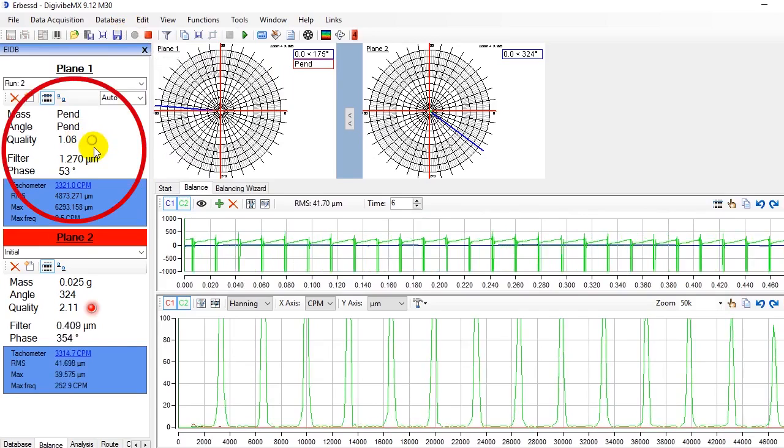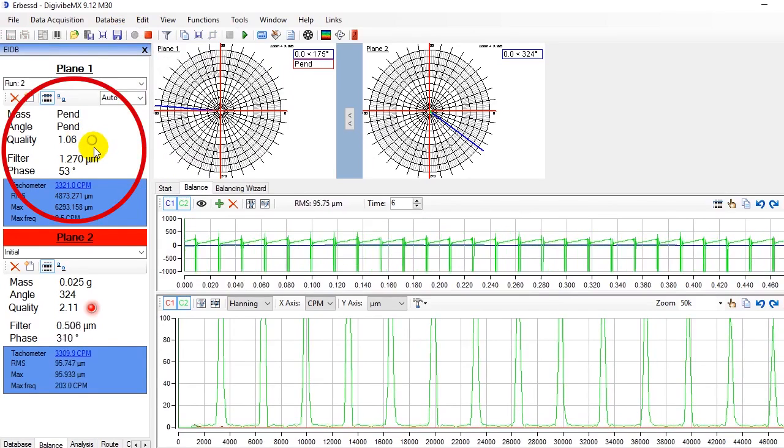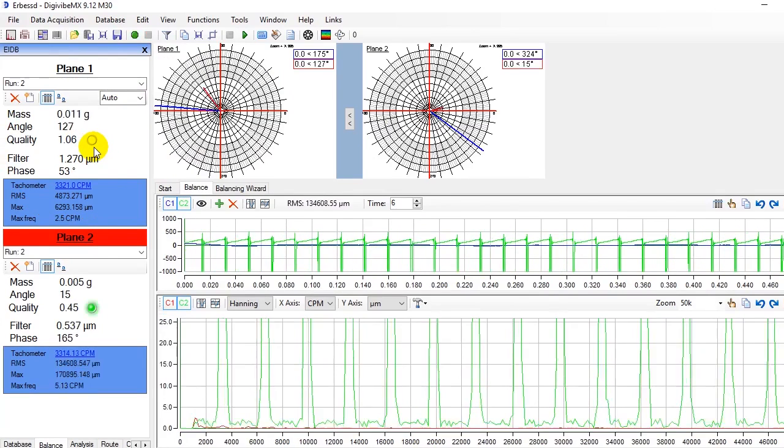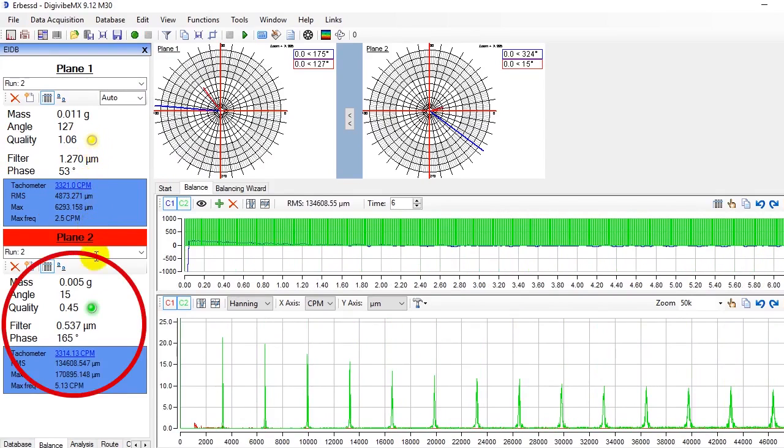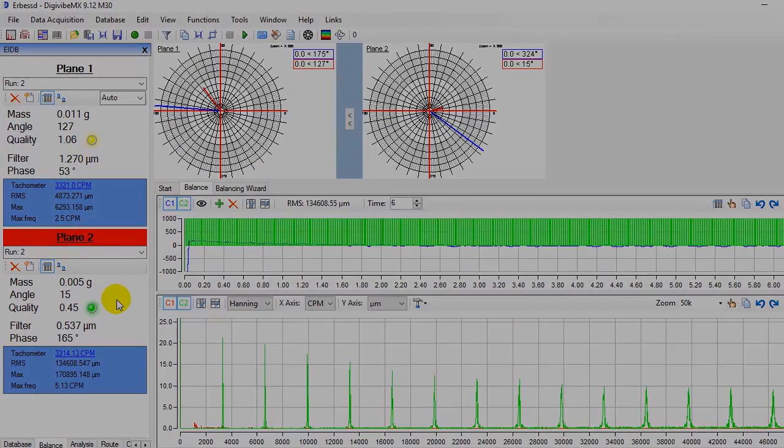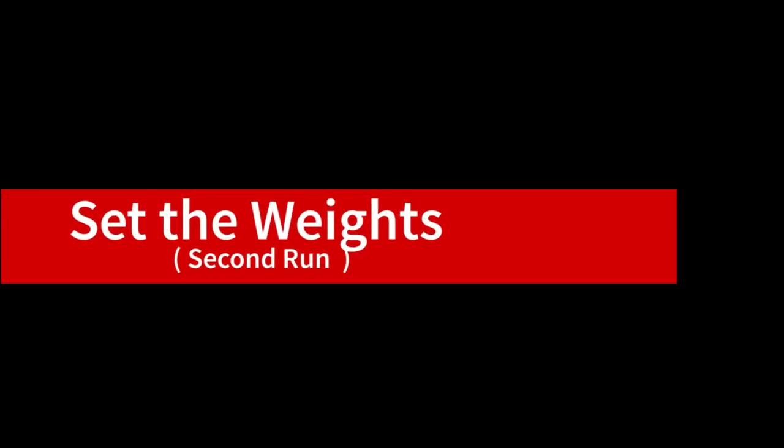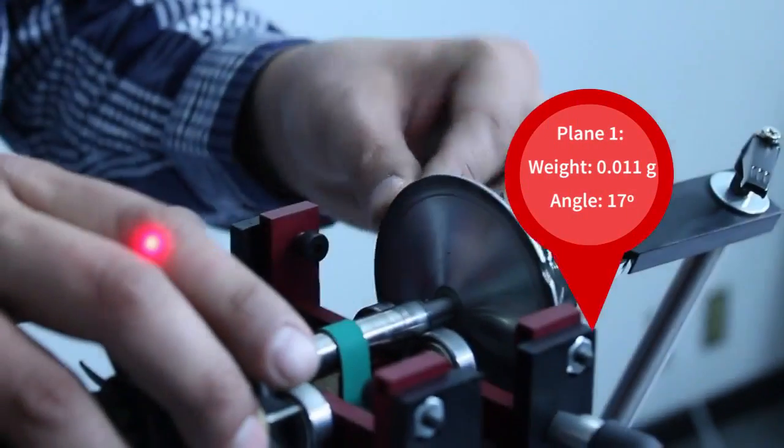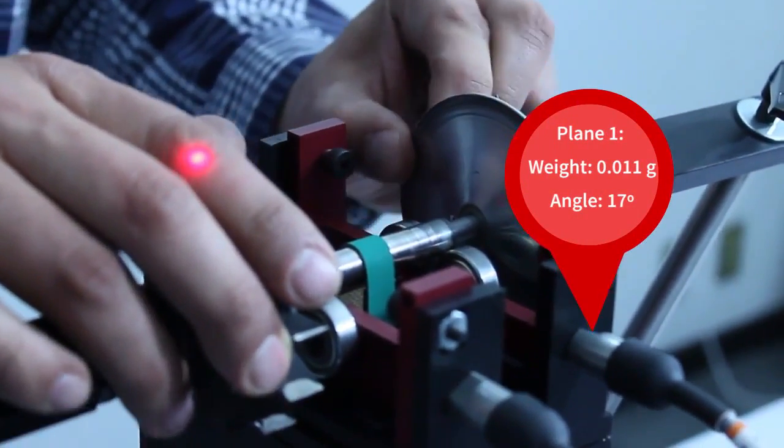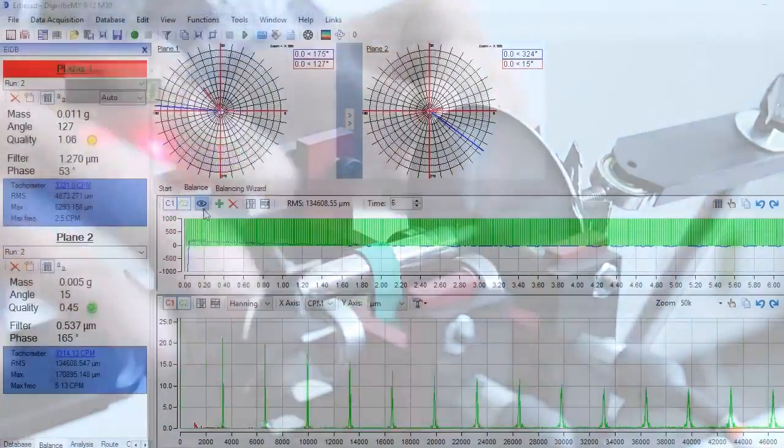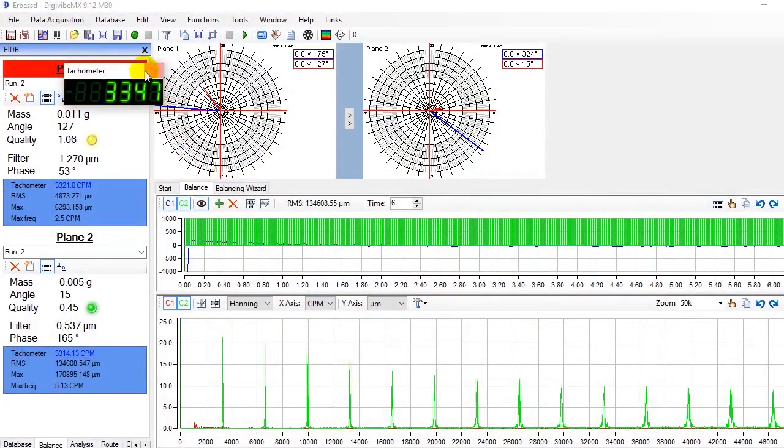The yellow dot on plane 1 indicates that the vibration is close to the desired quality grade, but it's not good yet. On plane 2, the green dot indicates that the quality grade has been achieved and it's better than the one we specified. Let's place the new counterweights to improve the balancing. These weights are smaller because they are for fine tuning. In this example, we put plasticine. We start up the machine again and measure vibration on both planes.